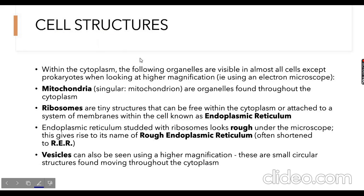In all cells, what are the most common structures present? Within the cytoplasm, the following organelles are visible in almost all cells except prokaryotes — meaning prokaryotes do not have these. These are mitochondria and ribosomes, and they are only visible under higher magnification, meaning you need to use an electron microscope. The first structure is mitochondria — singular mitochondrion — which are organelles found throughout the cytoplasm. They are the powerhouse of the cell, generating energy for the cell to function properly.